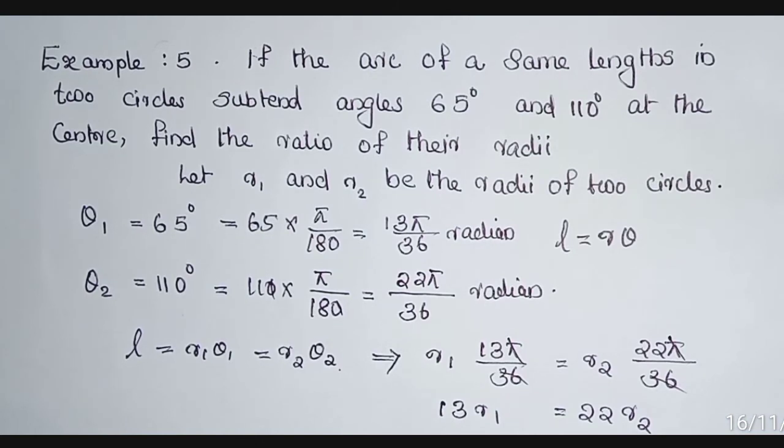Example 5: If the arcs of the same length in two circles subtend angles 65° and 110° at the centre, find the ratio of their radii. For that, let r₁ and r₂ be the radii of two circles.